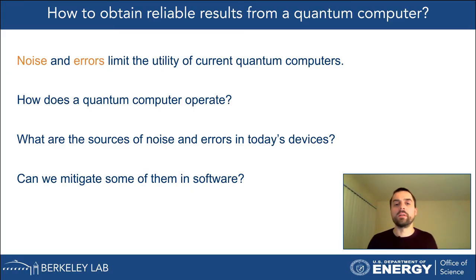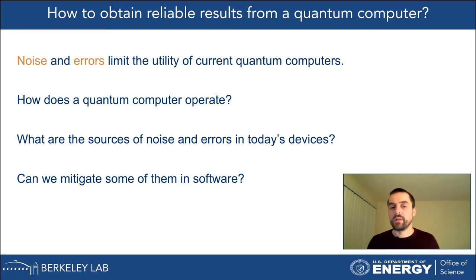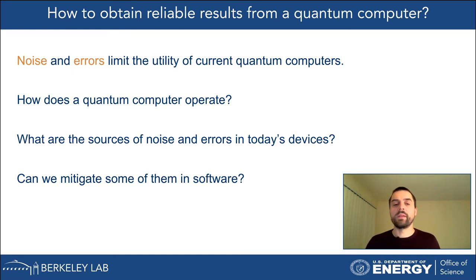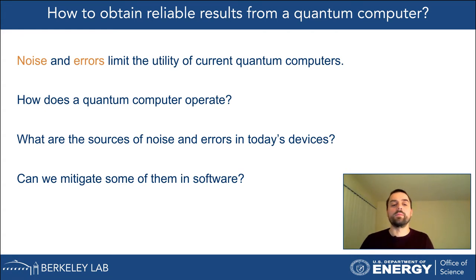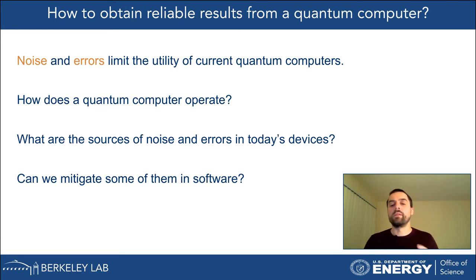Our goal is to obtain reliable results from quantum computers. But there is a problem: these devices are affected by noise and errors, and the accuracy of the results is very limited because of these factors. I'll briefly explain how quantum computers work, what the sources of noise and errors are, and discuss methods to mitigate these errors mostly in software — techniques that also work when accessing a quantum computer in the cloud, without physical access to the device.